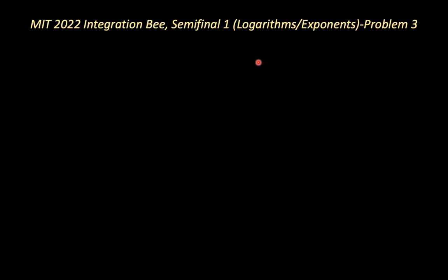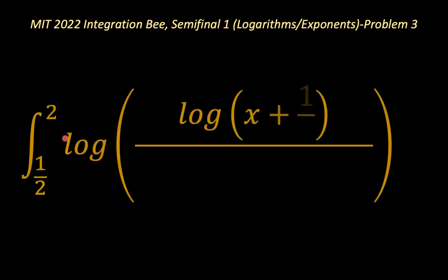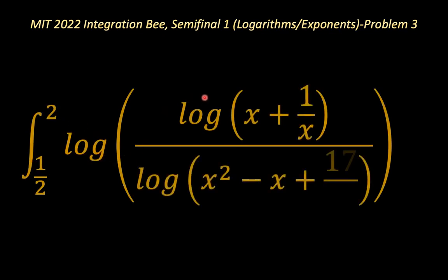So our problem is very interesting. It is the integral from x equals one half to two of the natural logarithm of the natural logarithm of x plus one over x, over the natural logarithm of x squared minus x plus seventeen over four. It's a beautiful problem.